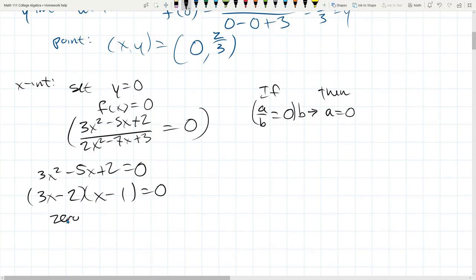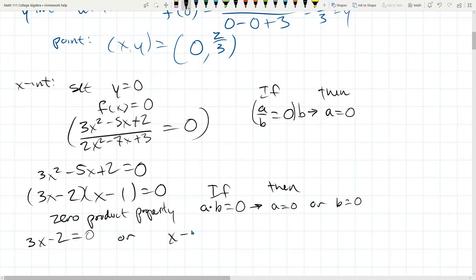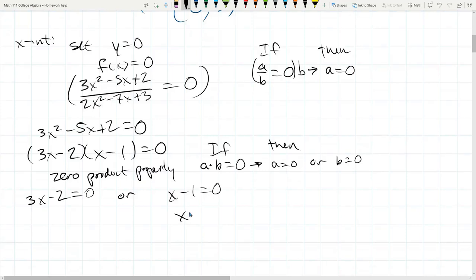So we're using the zero product property, which means when you have a product equaling zero, if a times b equals zero, then a is zero or b is zero. So 3x minus 2 is zero or x minus 1 is zero. So x minus 1 is zero means x is 1. 3x minus 2 is zero. That means 3x add 2 to both sides. 3x is 2. x is 2 thirds.